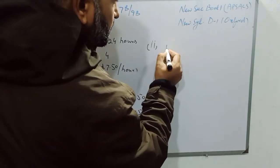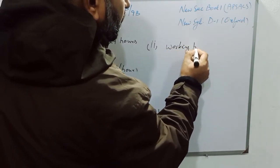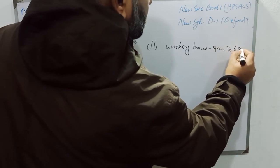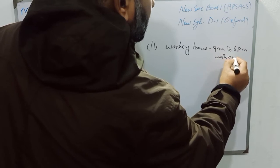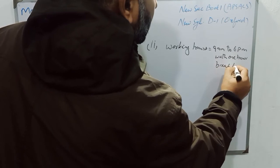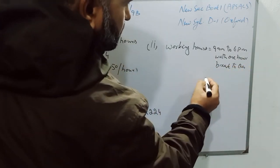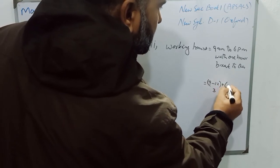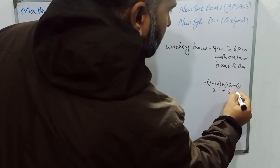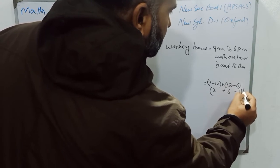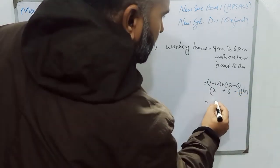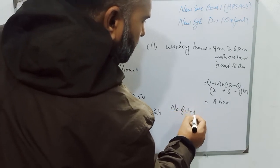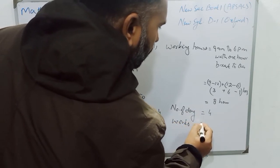In the second part, working hours are 9 am to 6 pm with a 1-hour break for tea. So working hours will be: 9 am to 12 pm is 3 hours, plus 12 to 6 pm is 6 hours, minus 1 hour break. Working hours will be 8 hours. Number of days are 4, and workers are also 4.